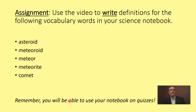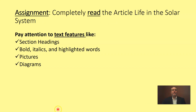Here's your assignment for today. I want you to go back through the video and write definitions for these vocabulary words in your science notebook — please remember you can use your science notebook when you take quizzes. Find definitions for: asteroid, meteoroid, meteor, meteorite, and comet. In addition, once you finish with your vocabulary, I want you to completely read the article Life in the Solar System — that's going to be posted in Google Classroom or directly on your USB drive. As you read, pay attention to text features like section headings and paragraph headings, look for words in bold, italics, or highlighted, and really look at those pictures, diagrams, and take some time to study them. We'll be using that article next week. So until next time, stay curious.